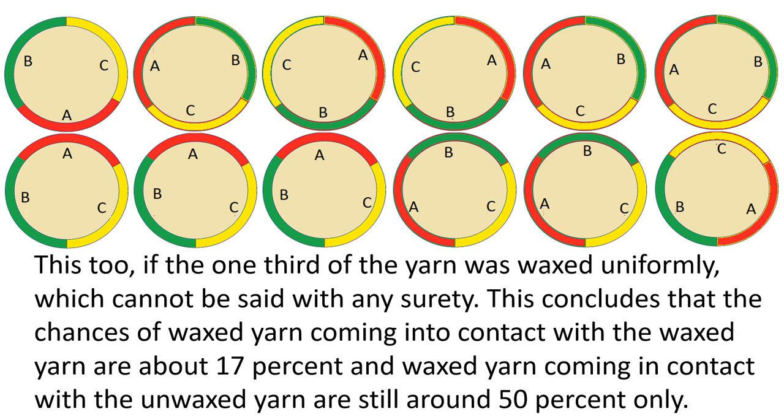This too, if the one-third of the yarn was waxed uniformly, which cannot be said with any surety. This concludes that the chances of waxed yarn coming into contact with the waxed yarn are about 17 percent, and waxed yarn coming in contact with the unwaxed yarn are still around 50 percent only.